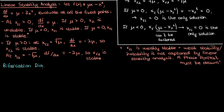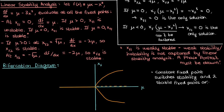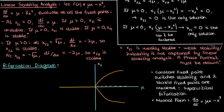Let's now draw the bifurcation diagram showing all this behavior. For negative μ and for μ = 0, we have only one stable fixed point at 0, shown with a solid line. For positive μ, the fixed point at 0 becomes unstable — shown with a dashed line — but two additional stable fixed points are created at ±√μ. As we go from negative μ to positive μ, the fixed point at 0 switches stability and two stable fixed points are created. This is what defines a supercritical pitchfork bifurcation, whose normal form is dx/dt = μx − x³. It's called a pitchfork because the bifurcation diagram looks like a literal pitchfork.